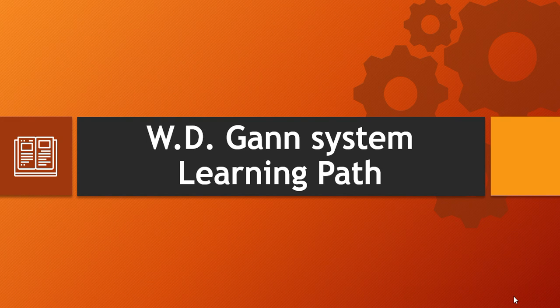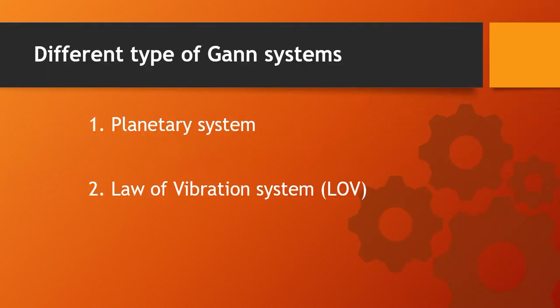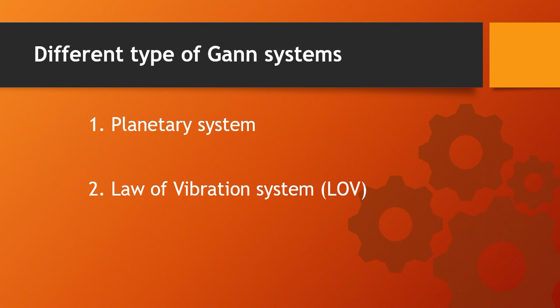We are not going to talk here about who WD Gann was — there is a lot of information available on the internet, you can just Google it. So let's see where to start learning. There are two different types of Gann systems: the first one is the planetary system, where some planets are involved, and the second one is the Law of Vibration system, or LOV system. These are totally different systems — the planetary system involves planets, and the LOV system is purely numbers with no planets involved.